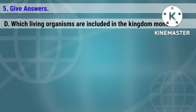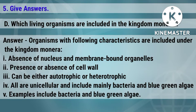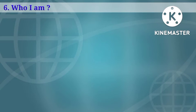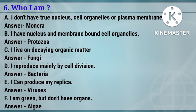Part d: which living organisms are included in the kingdom Monera? Organisms with the following characteristics are included: absence of nucleus and membrane-bound organelles; presence or absence of cell wall; can be either autotrophic or heterotrophic; all are unicellular. Examples include mainly bacteria and blue-green algae.